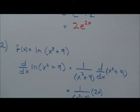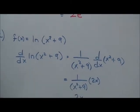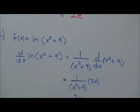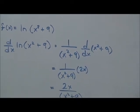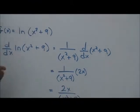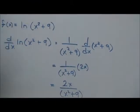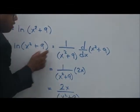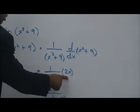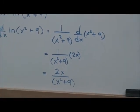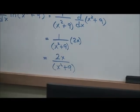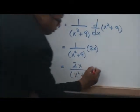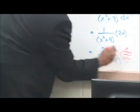Number 2: f of x equals the natural log of x squared plus 9. Taking the derivative, we treat the natural log as the outside — giving 1 over x squared plus 9 — and take the derivative of the inside, x squared plus 9, which gives 2x. So 1 over x squared plus 9 times 2x gives a final solution of 2x divided by x squared plus 9.